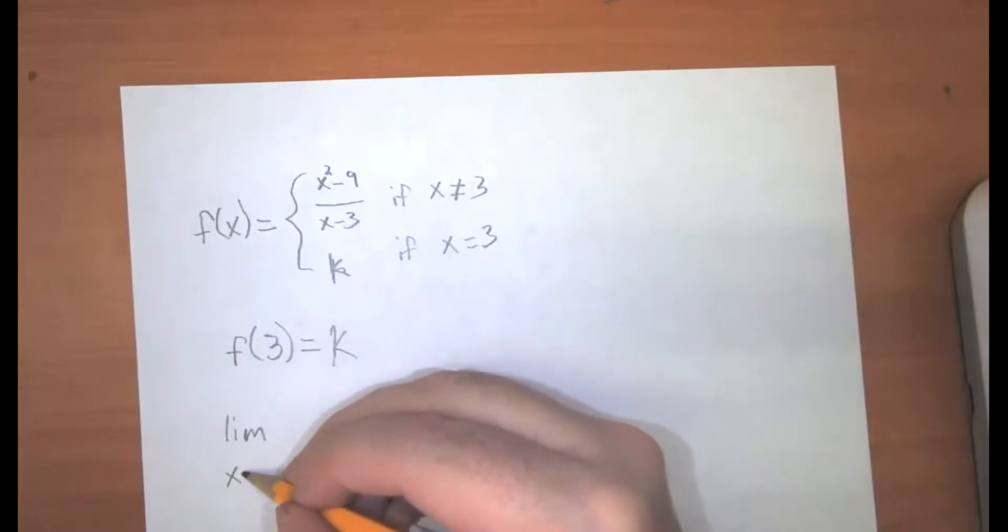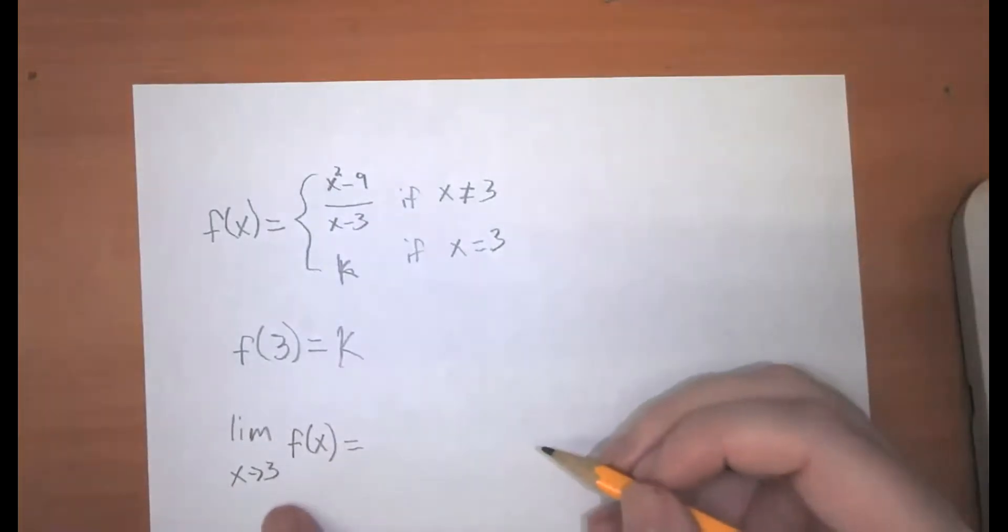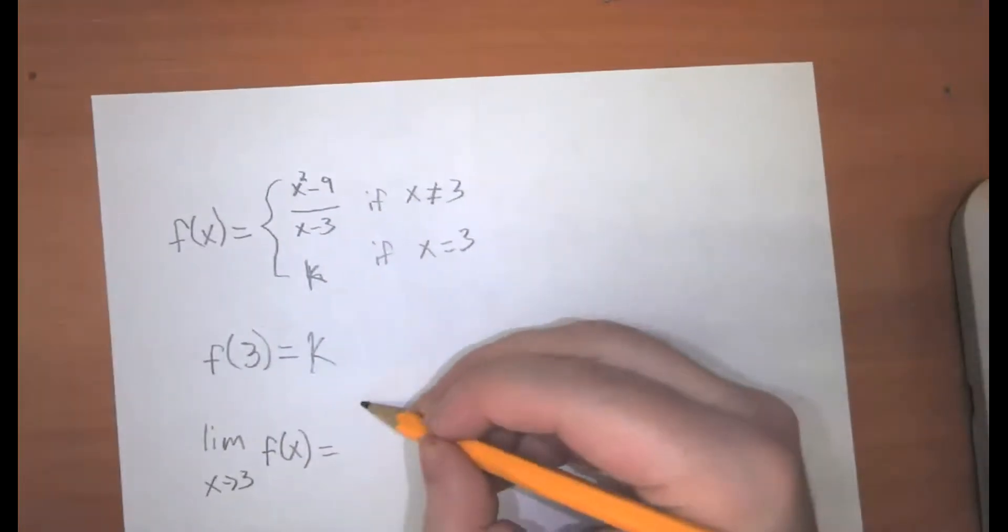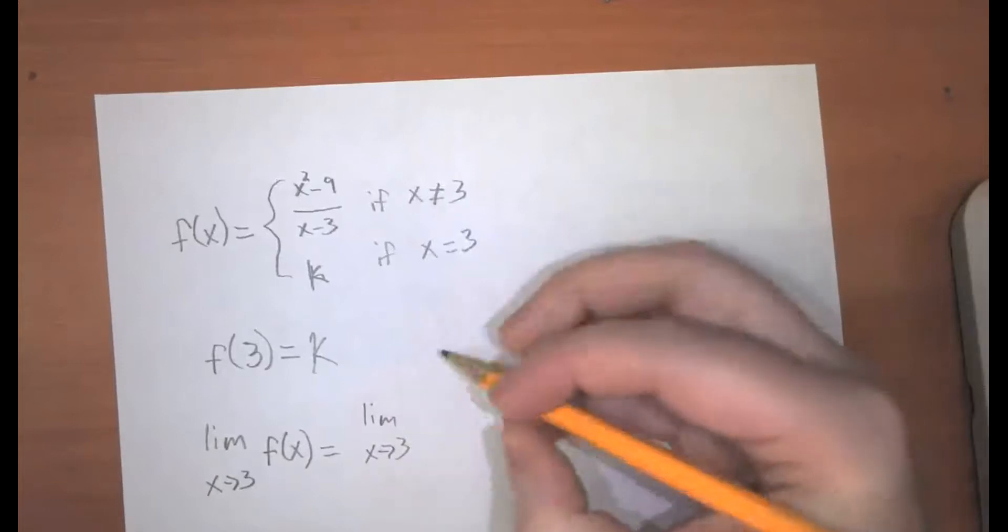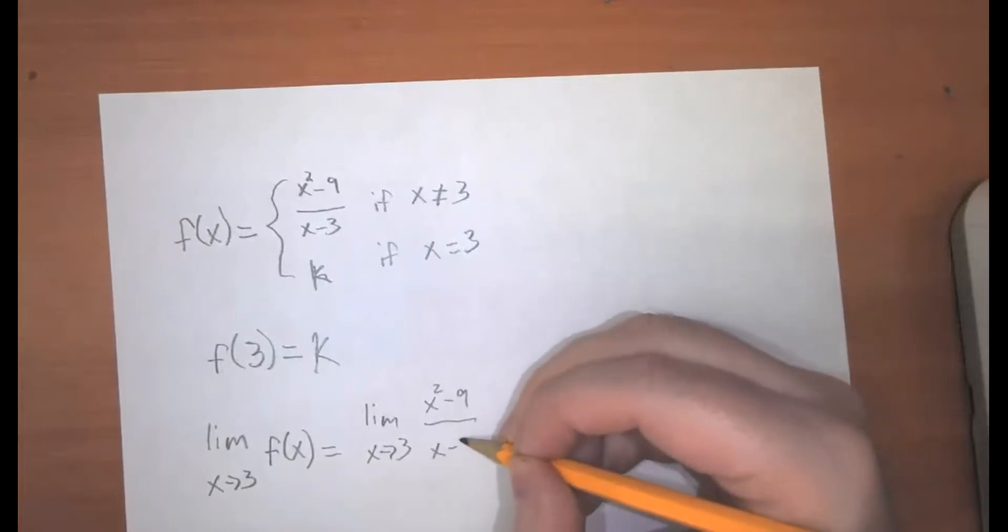And the limit as x approaches 3 of f of x, so this is using every value of x other than 3. So for this, we're going to use the top function. So we need to calculate the limit as x approaches 3 of x squared minus 9 over x minus 3.